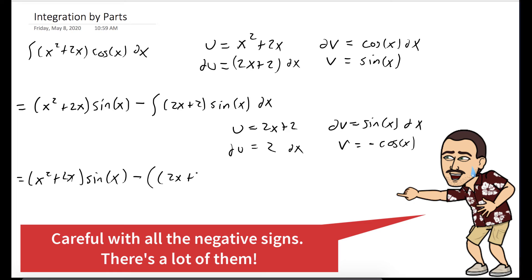And now we'll subtract off u times v, which is 2x plus 2 times negative cosine of x minus the integral of vdu. So negative 2 cosine of x.